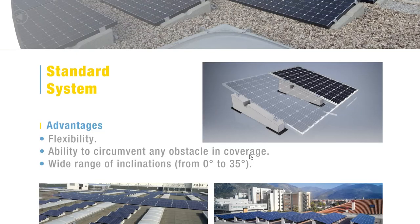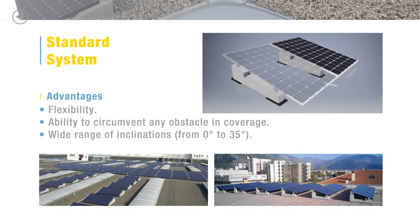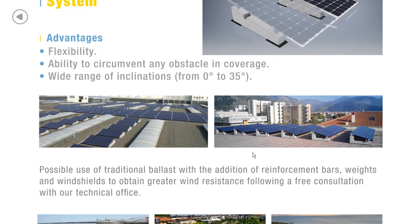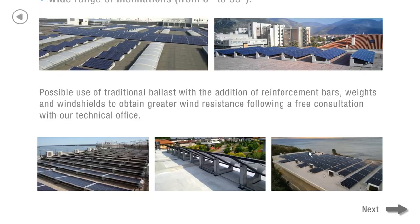The standard system is very simple and has many advantages. The first is flexibility. The second is the possibility to circumvent any obstacle on the cover. The third is that it comes with a wide range of inclination, from 0 to 35 degrees — 34 models with multiple inclinations that allow you to place the panels in landscape or portrait and in east-west orientation. There is also the possibility of using additional bars, weights, and windshields to increase wind resistance, and our technical department advises which accessories to use.